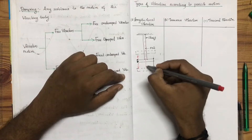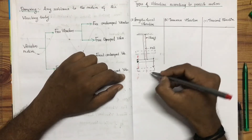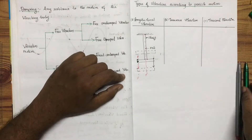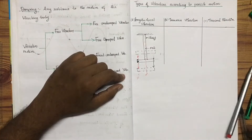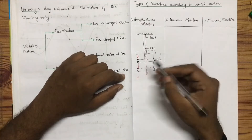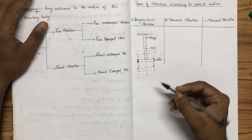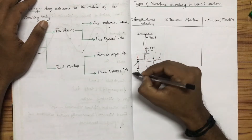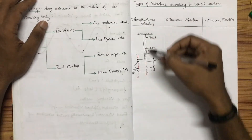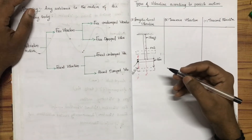When the particle is vibrating parallel to the axis of the shaft — this is the particle of the shaft or disk — and the axis is parallel to the axis of the shaft, when particles of the shaft or disk move parallel to the axis of the shaft, that is known as longitudinal vibrations.